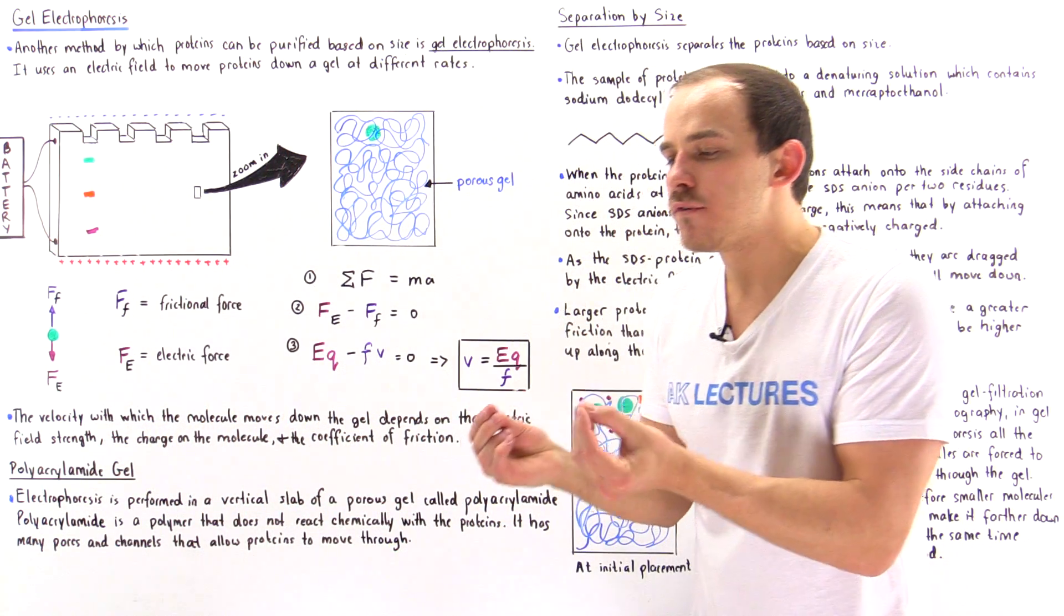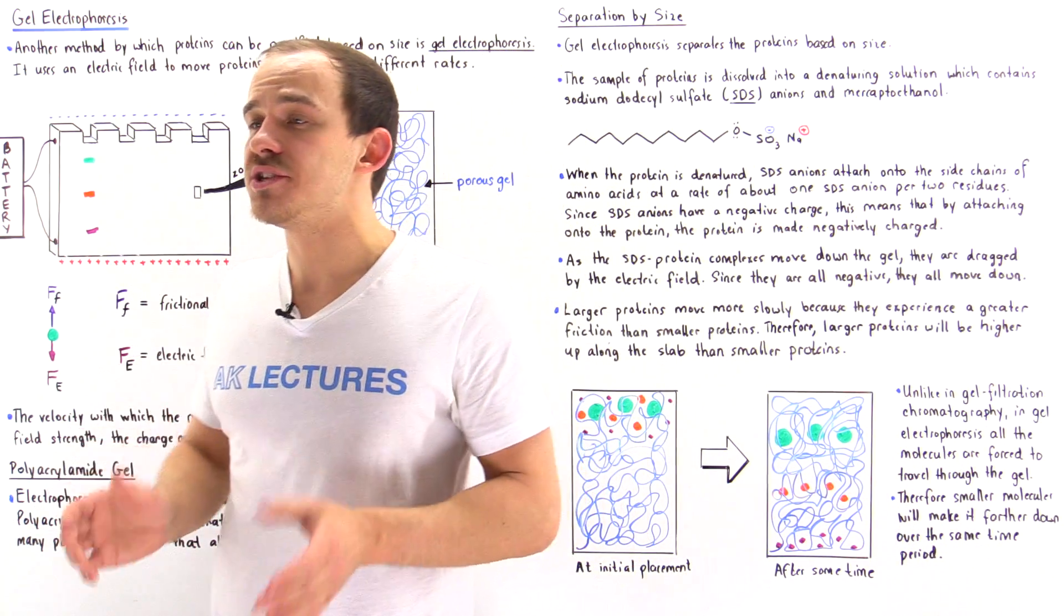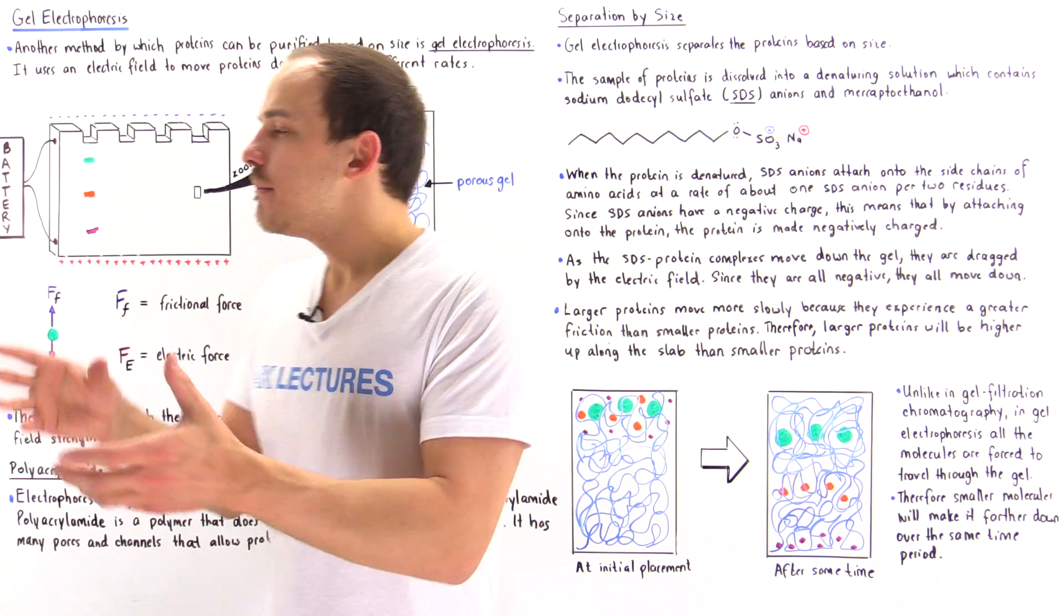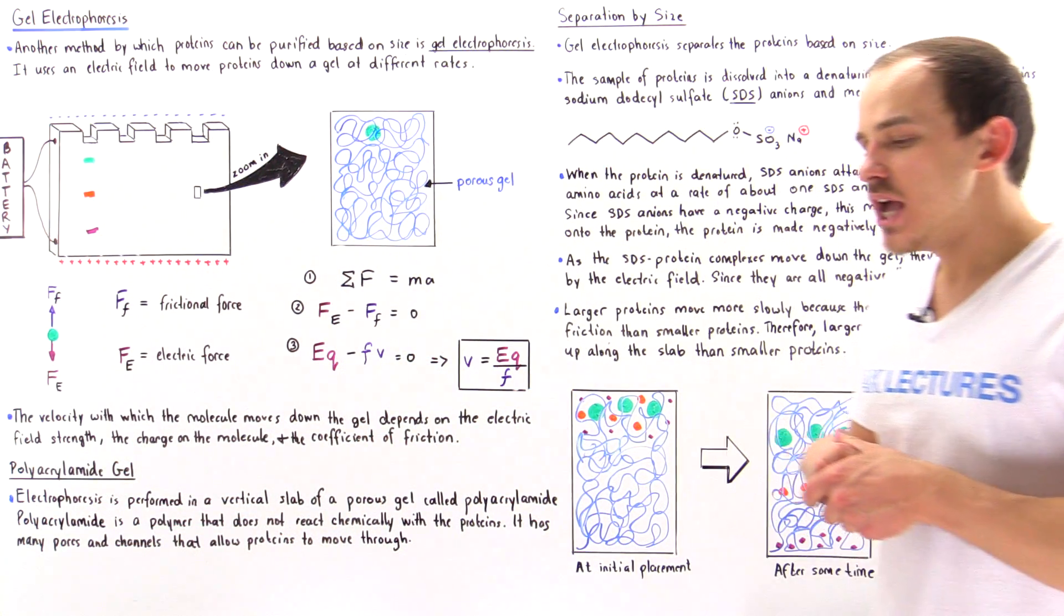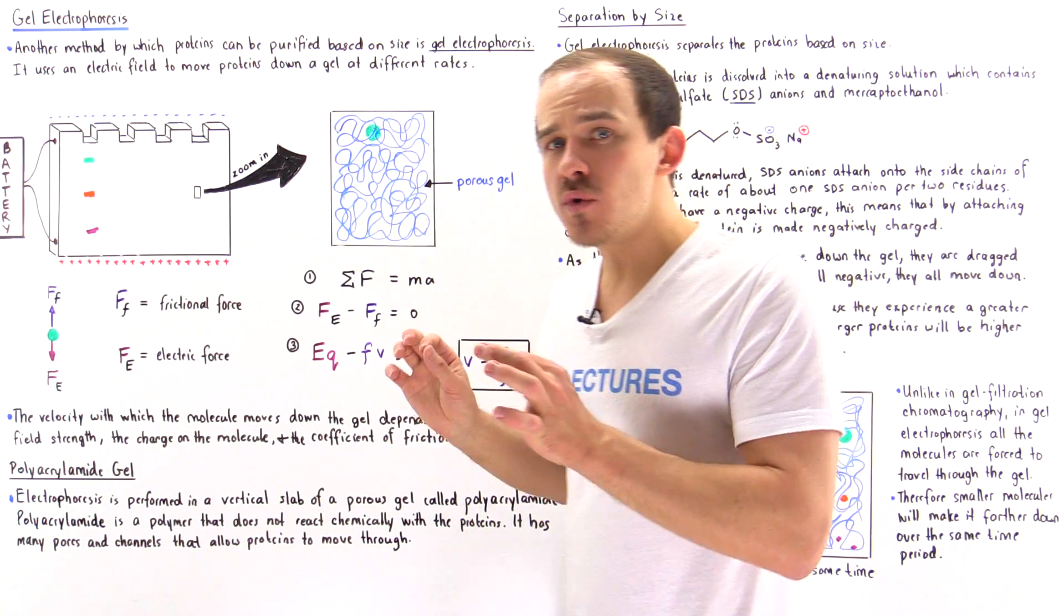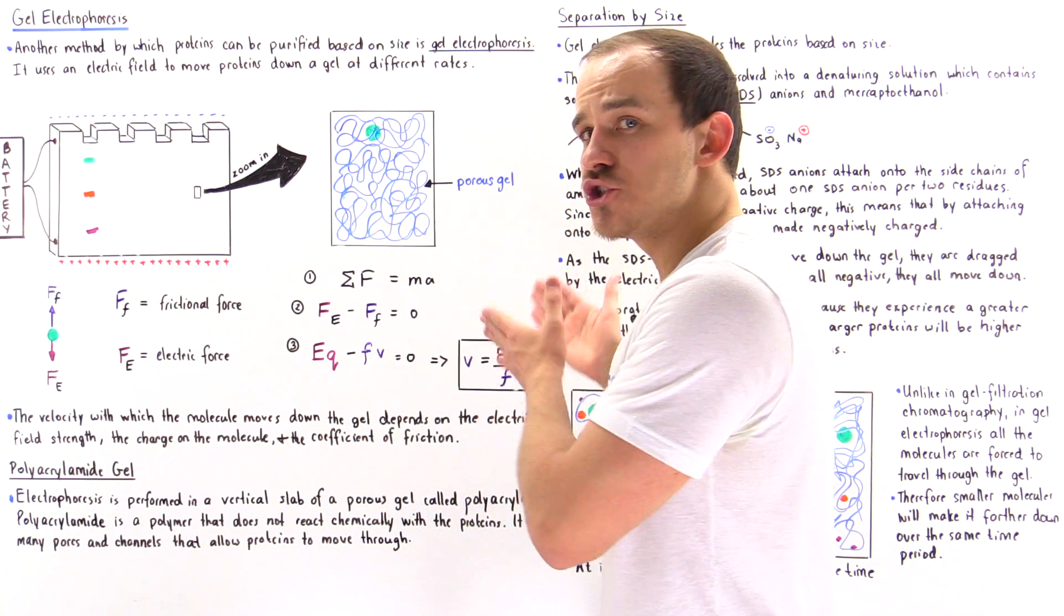Because both of these techniques do the same exact thing. They basically separate the proteins based on size. But what's the major difference between these two methods? Well, in gel electrophoresis, all of these proteins in the mixture are forced to move through the porous gel.